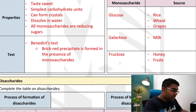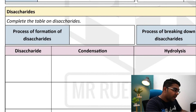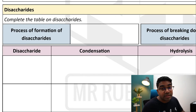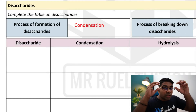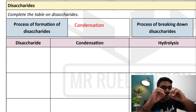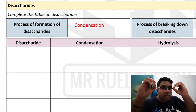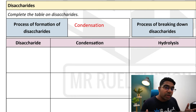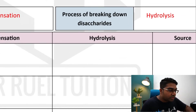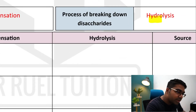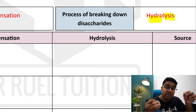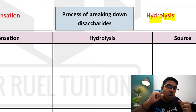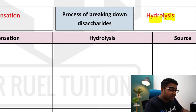Disaccharides are formed by chemically combining two monosaccharides, and this process is called condensation. The opposite process, where disaccharides are broken down into two individual monosaccharides, is known as hydrolysis. Hydro stands for water, lysis stands for breakdown — hydrolysis is the breaking down of a substance by adding water. Let's look at these reactions specific to the disaccharides.